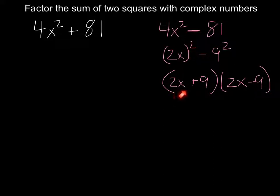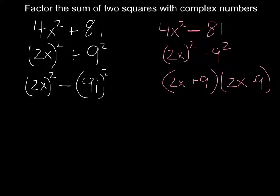The formula tells me that equals 2x plus 9 times 2x minus 9. The sum of squares can be done in a similar way if I use complex numbers. So this is equal to 2x squared plus 9 squared, which is also equal to the same thing except 9i, or subtracting 9i squared.